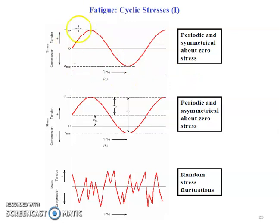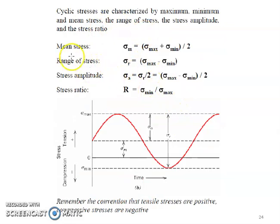These are the stresses produced alternately. We have tension and compression, tension and compression. This can be random or periodic around zero stress. This is an important parameter.